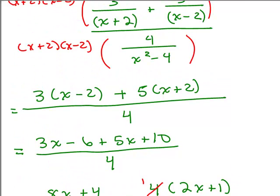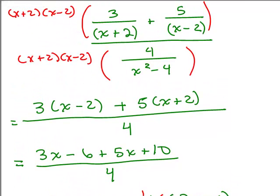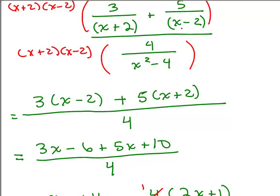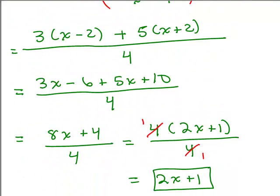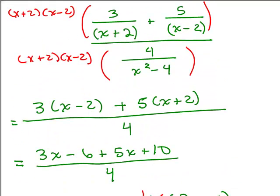This can also be done using method 1: get a common denominator in the numerator of the complex fraction to form a single fraction, then multiply by the reciprocal — you get exactly the same answer. My suggestion: if you have an addition problem with fractions in the numerator or denominator, method 2 is usually easier. If you already have a single fraction in the numerator or denominator, it's just as easy to multiply by the reciprocal.